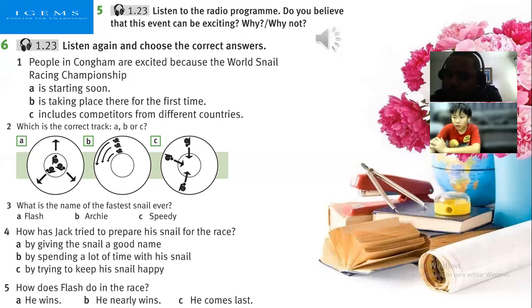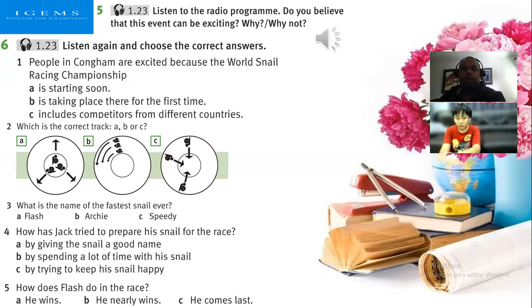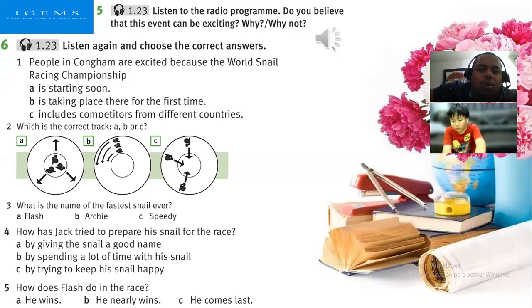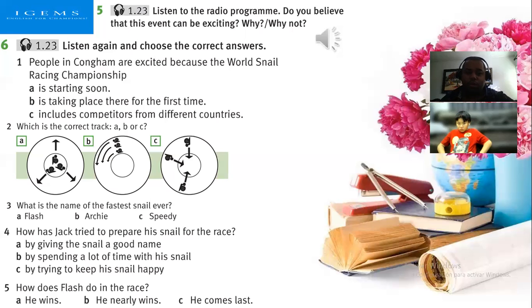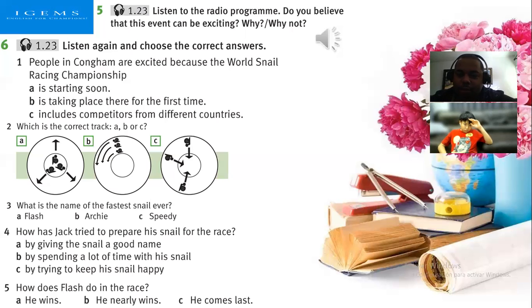Okay, so let me see. I'm going to ask you some questions — we are going to complete this exercise. You're going to tell me the correct answer. We have a multiple choice exercise. Number one: people in Congham are excited because the World Snail Racing Championship — what do you think the right answer is? A: is starting soon; B: is taking place there for the first time; C: includes competitors from different countries. What do you think?